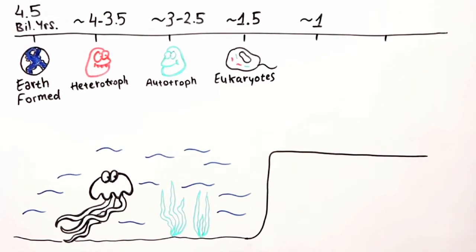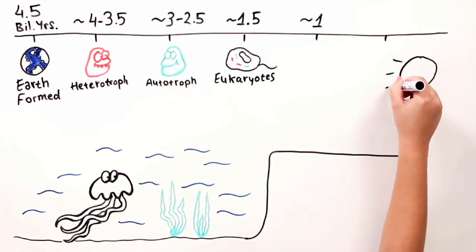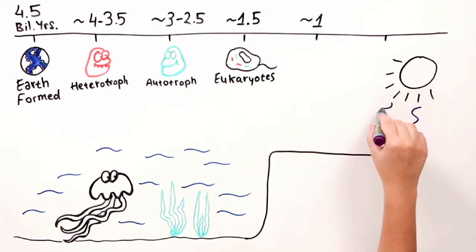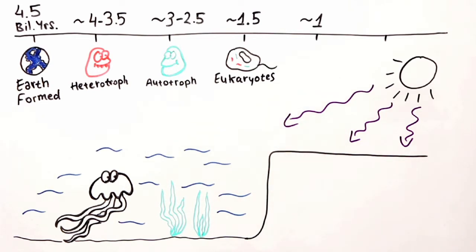The land was originally uninhabitable — it was dry, had extreme temperatures, and was exposed to harmful UV radiation.